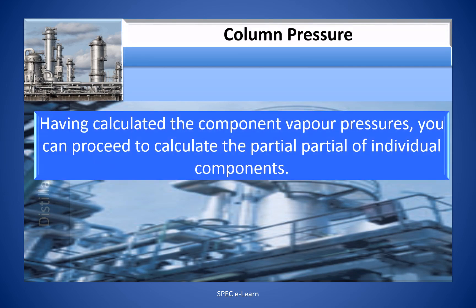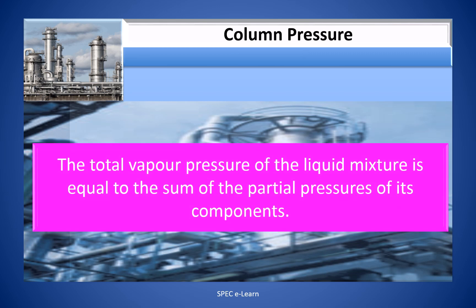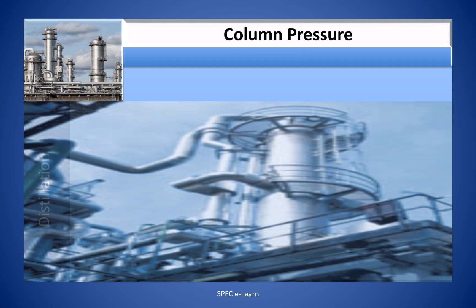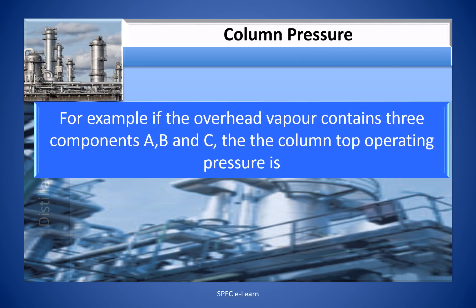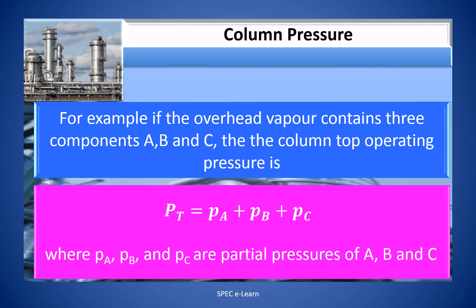Having calculated the component vapor pressures, you can proceed to calculate the partial pressure of individual components. According to Raoult's law, the partial pressure of a component is the product of the pure component vapor pressure and its mole fraction in the liquid. The total pressure of the liquid mixture is equal to the sum of the partial pressures of its components. For example, if the overhead vapor contains three components A, B, and C, the column top operating pressure is Pt = Pa + Pb + Pc, where Pa, Pb, and Pc are the partial pressures of components A, B, and C.